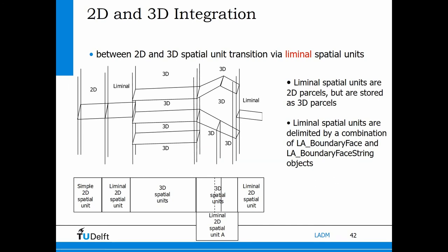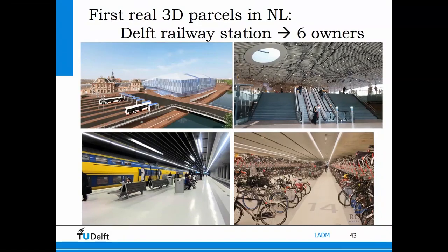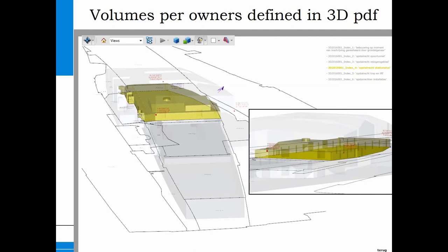It can be any 3D volume as we can see on this image, and LADM allows this to be represented. A good example from the Netherlands: the first real 3D parcel was registered about a year ago, in March 2017 — the railway station in Delft — with a number of different owners each owning different spaces. This was described in a 3D PDF document.